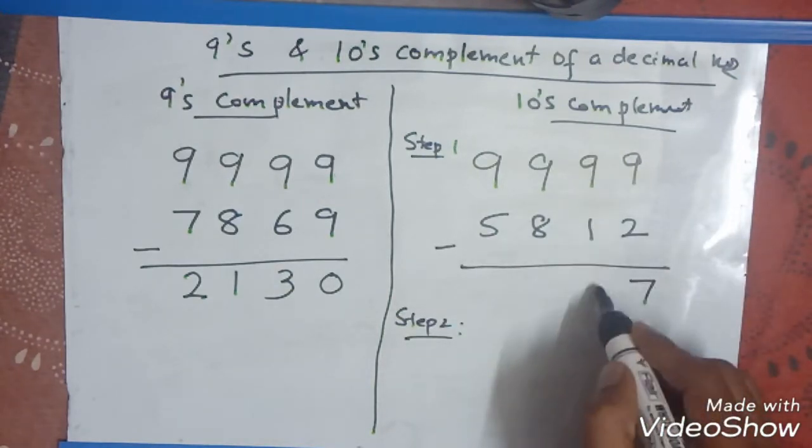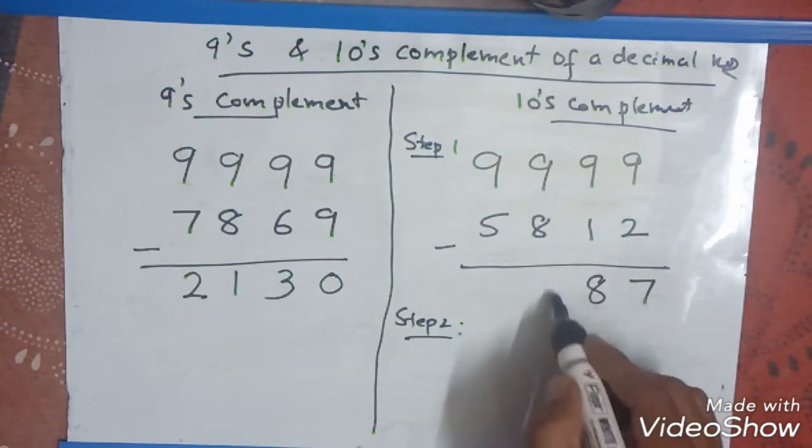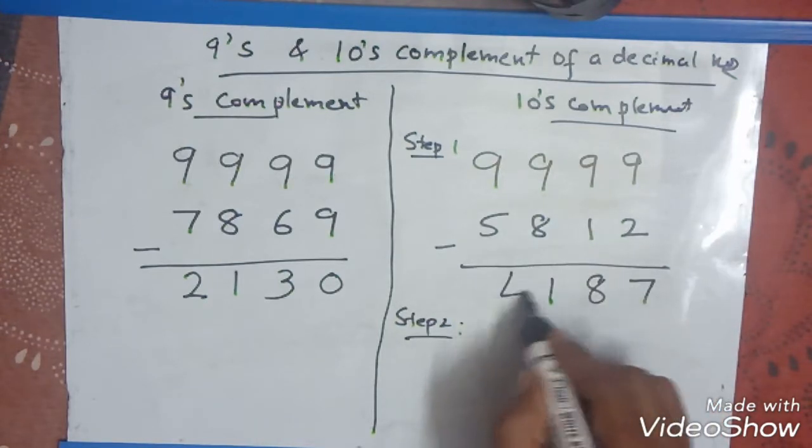9 minus 2 is 7, 9 minus 1 is 8, 9 minus 8 is 1, 9 minus 5 is 4.